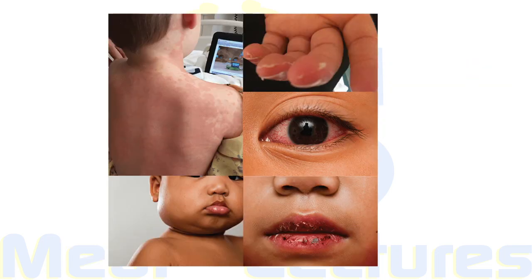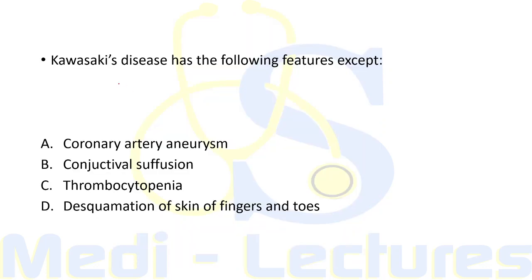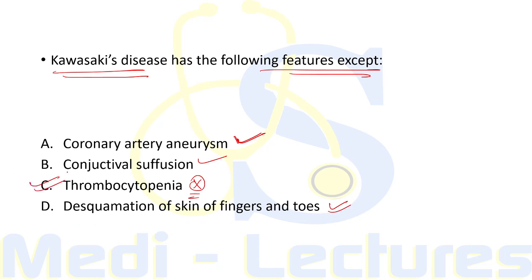Typical manifestations of Kawasaki Disease include peripheral erythema of the hands, bilateral non-suppurative non-exudative conjunctivitis, lip erosions, and cervical lymphadenopathy. Practice question: 'Kawasaki disease has following features except?' Coronary artery aneurysm — found. Conjunctival suffusion — found. Thrombocytopenia — not mentioned. Desquamation of skin of fingers and toes — yes. The correct answer is thrombocytopenia.